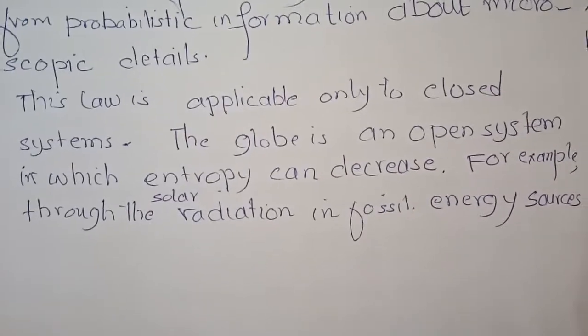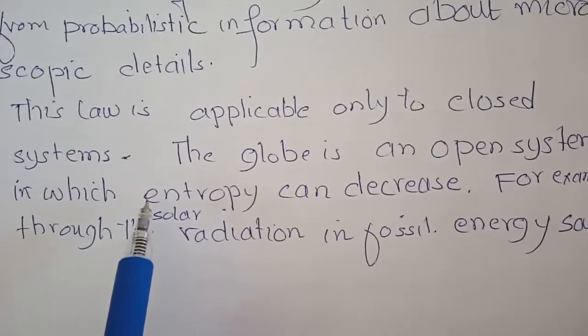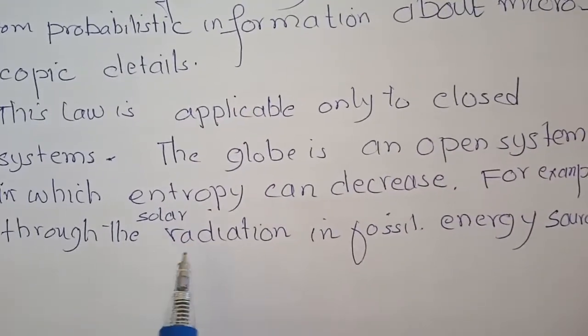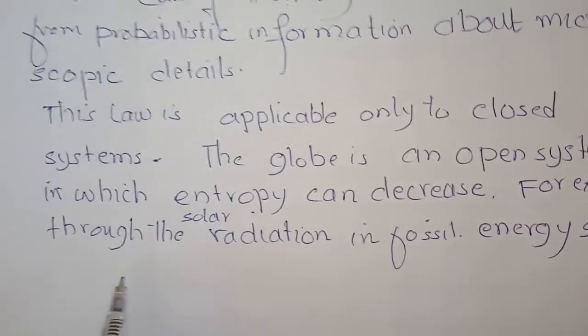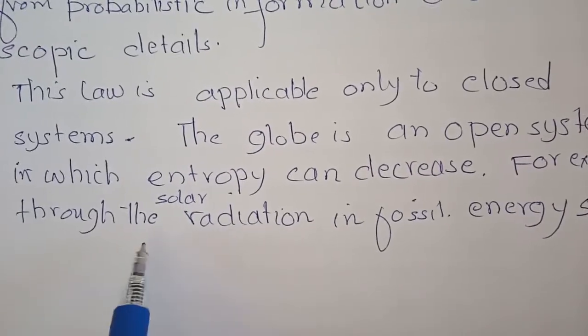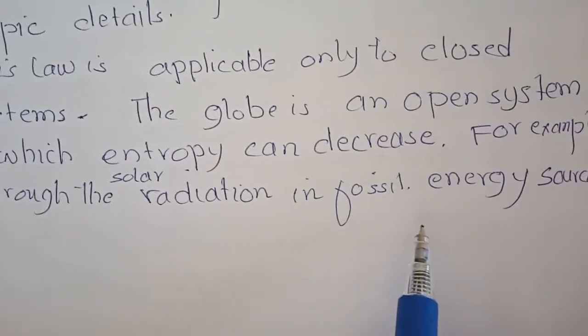This law is applicable only to closed systems. Whereas the globe is an open system in which entropy can decrease, for example through circular radiation or storage of radiation in fossil energy sources.